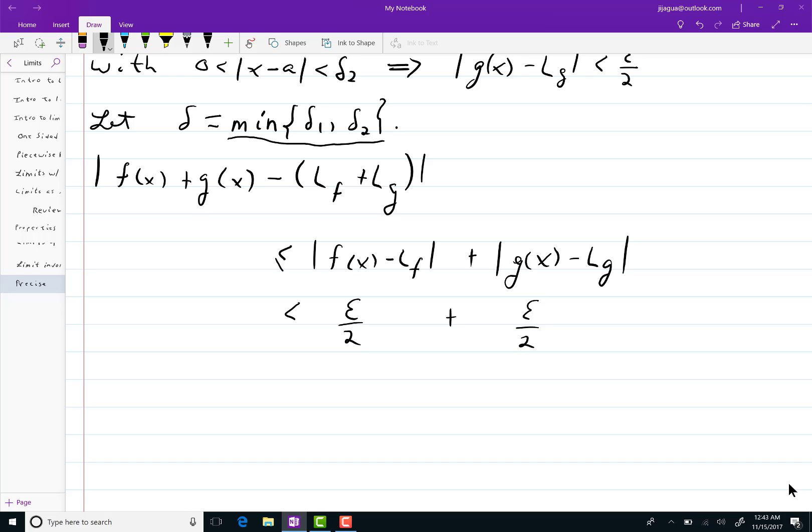then when I take care of the f of x part, this single delta will satisfy the delta 1 part since it's less than or equal to it. So that's like an epsilon over 2 there. Same thing for the other piece.